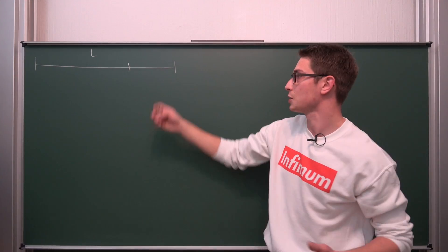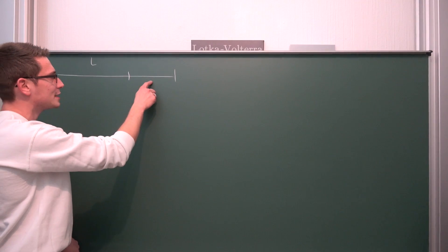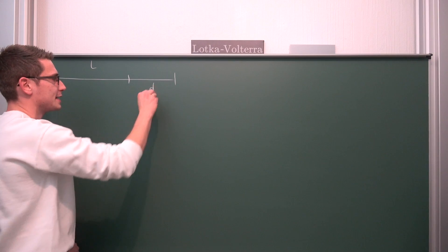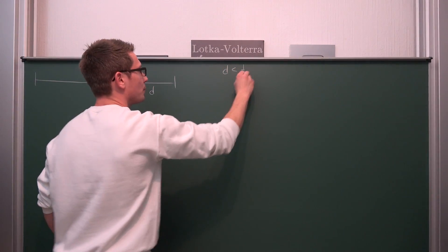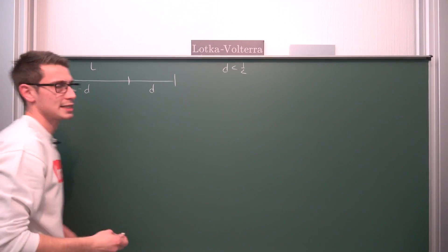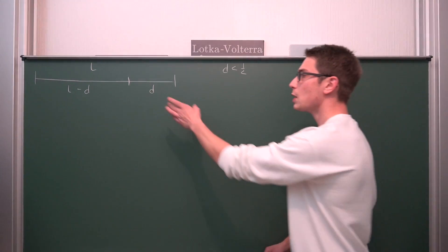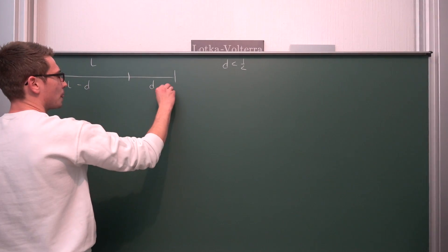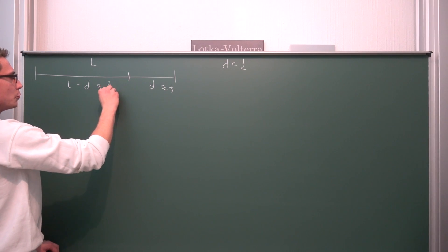And if D is less than one half, then this part right here is the length minus D — our total length minus D. This right here was our original guess at being approximately one third, and this right here must hence be approximately two thirds.